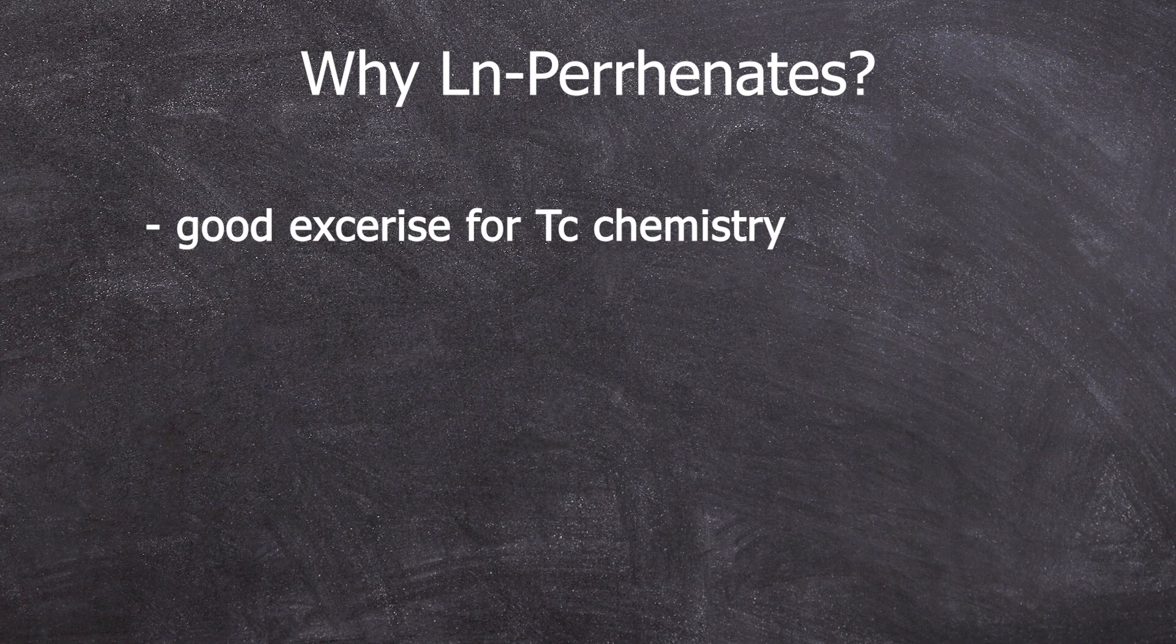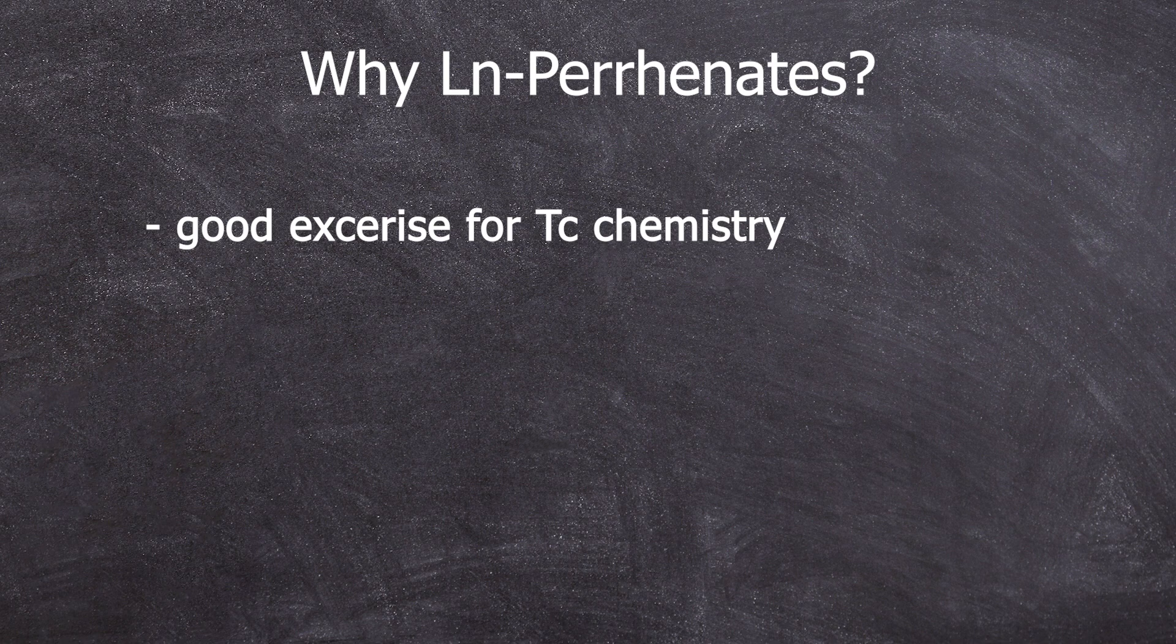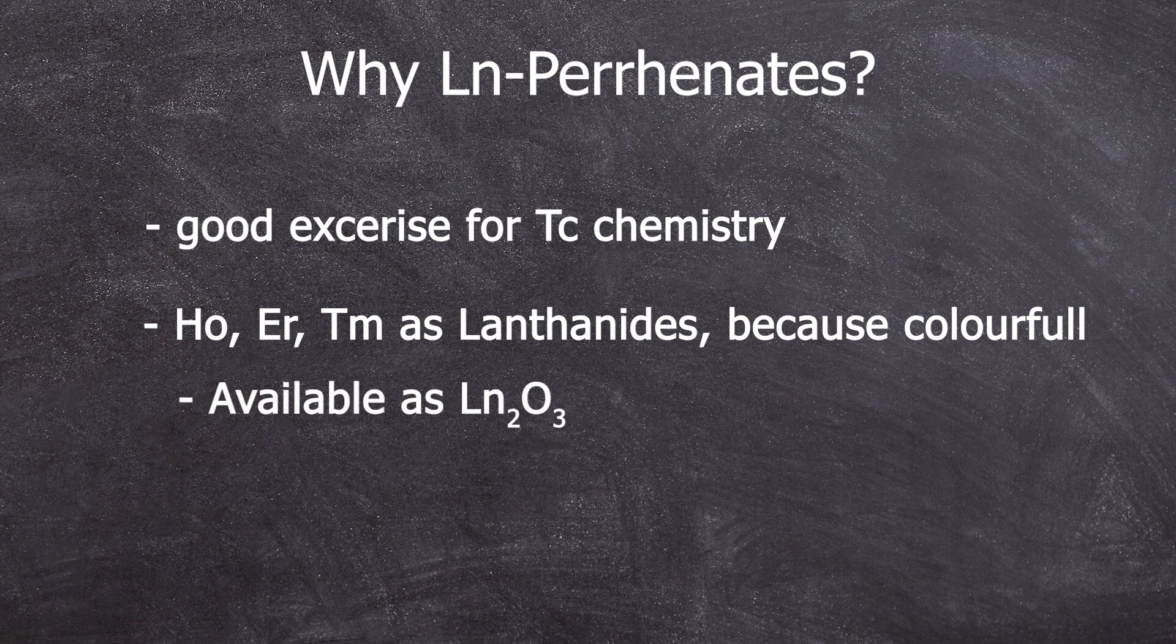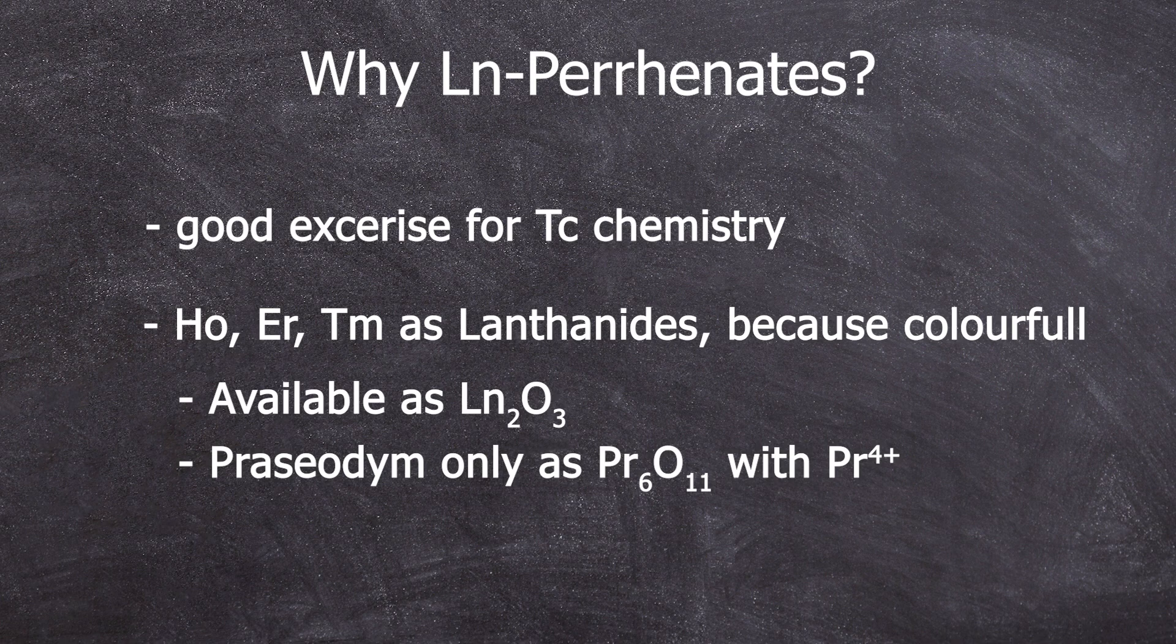And why specifically holmium, erbium, and thulium? Honestly, simply because they are conveniently located next to each other, they all have nice colors, and the oxides are easy to weigh. We only showed praseodymium because it has some research value, but since it's in the form of a mixed valence oxide, Pr6O11 with the praseodymium 4+, which requires more thought, and I just wanted to keep the video simple.